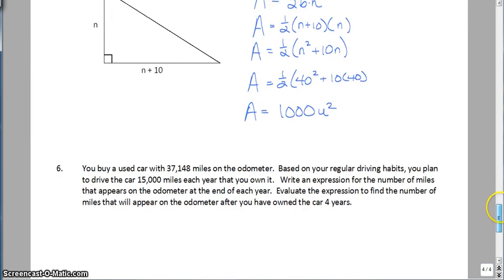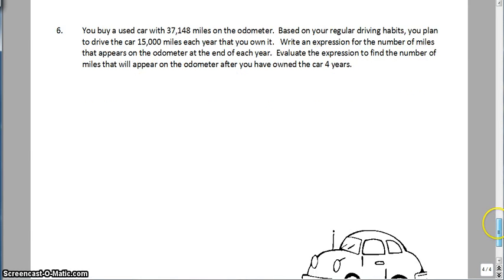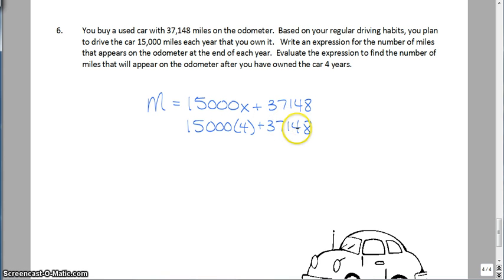So, this last example we have 1 minute and 15 seconds for before I run out of time. Basically what you want to do is you want to read this word problem. And then you want to come up with an expression to help us find the number of miles that will appear on the odometer after you have owned the car for four years. So, after you go through the information, the miles is going to be equal to 15,000 miles per year plus the original odometer reading of 37,148. Have it for four years. So, we're going to substitute 4 for x. A little bit of calculation and we have 97,148 miles. Remember to not forget your units.